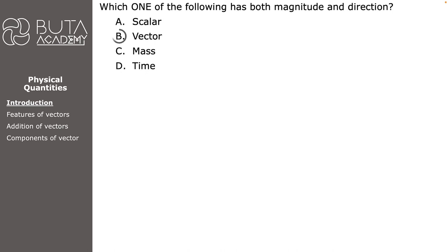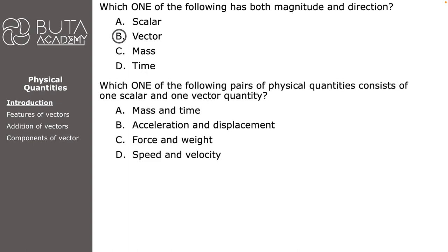Second question: which one of the following pairs of physical quantities consists of one scalar and one vector quantity? A. Mass and time, B. Acceleration and displacement, C. Force and weight, D. Speed and velocity. Mass and time in option A are both scalar quantities. Same can be said about force and weight in option C. In option D we have speed as a scalar quantity and velocity as a vector quantity, so this is our answer.